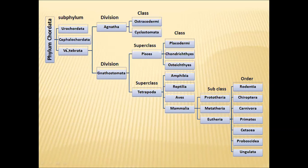As they possess vertebrae, the name Vertebrata has been assigned to this group. All these organisms also possess a cranium, which is a skull-like structure present in the head region. The brain is safely placed inside this cranium. Because they possess this cranium, they are also assigned the name Craniata.